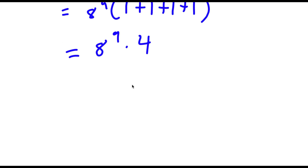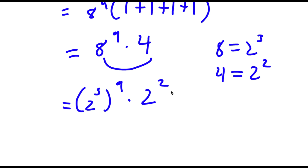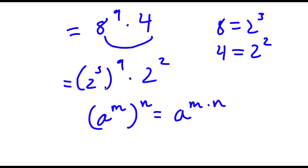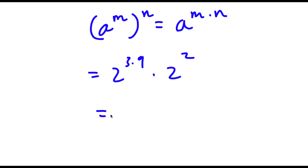Now to solve this, I'm going to make both of these terms into the same base. So 8 is the same thing as 2 to the power of 3, and 4 is the same thing as 2 to the power of 2. So now if I replace these two terms, I get 2 to the power of 3 to the power of 9, times 2 to the power of 2. Now, if I have a to the power of m to the power of n, this is the same thing as a to the power of m times n. So 2 to the power of 3 to the power of 9 equals 2 to the power of 3 times 9. Now I have this times 2 to the power of 2. Now 3 times 9 is equal to 27, so I have 2 to the power of 27 times 2 to the power of 2.